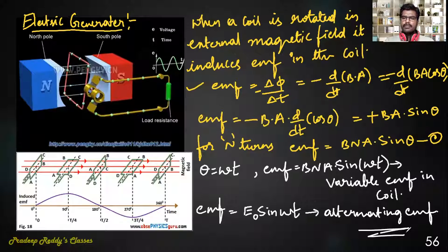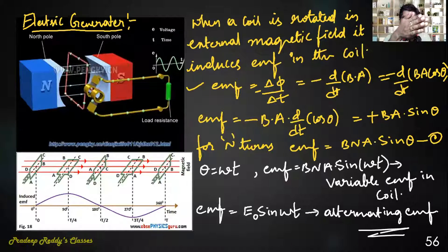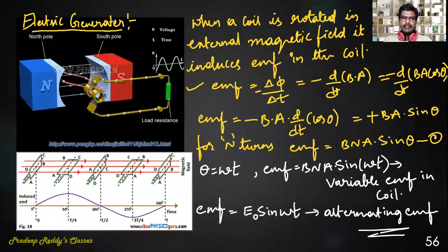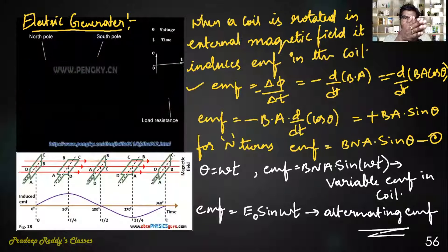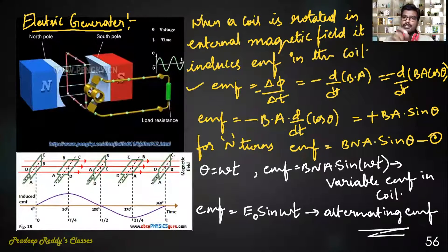Now let us see how this variable EMF is achieved in the coil. In the animation you can clearly see there is a coil placed perpendicular to the magnetic field initially. That coil is then rotated. Divide the total rotation of the coil into four different quarters: 0 to 90, 90 to 180, 180 to 270, and 270 to 360 degrees.